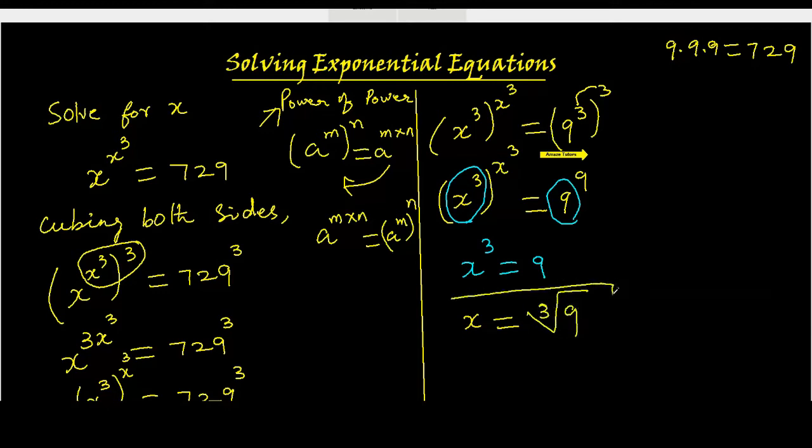This is our final answer. I hope you understand each and every step explained here. Let's do the checking part in the other page. What is the question given? Let's keep the expression here. X to the x cubed equals 729. I am taking the original question itself, not after cubing.